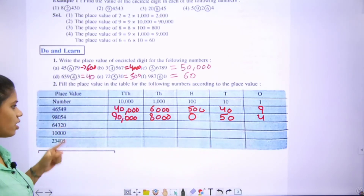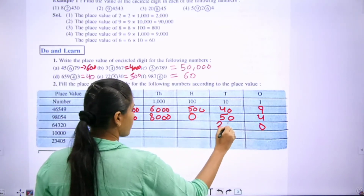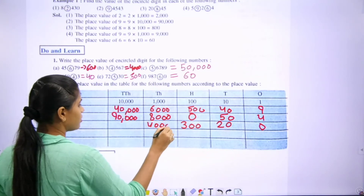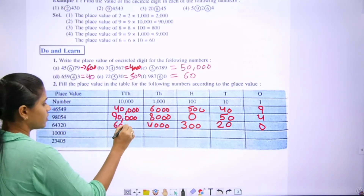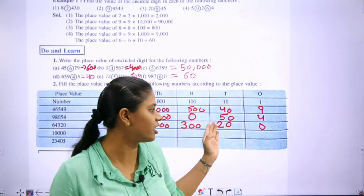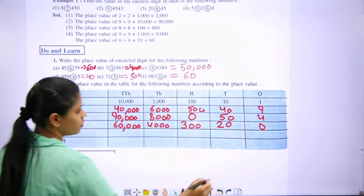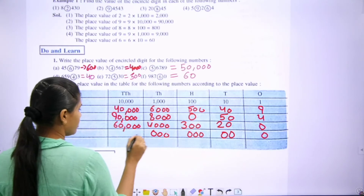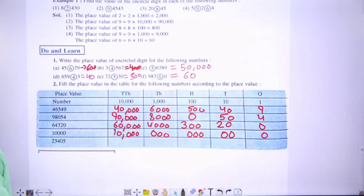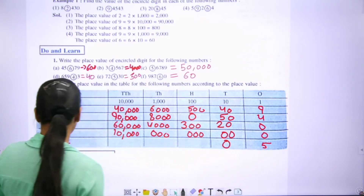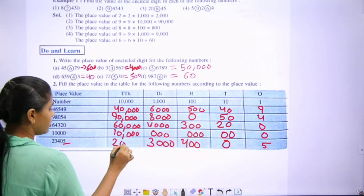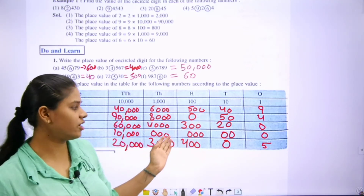Move to the next one. Ones, then tens, then hundred, then thousand, then six thousand — that is sixty-four thousand three hundred twenty. Next: ones, tens, hundred, then ten thousand. Next: ones, tens, hundred, thousand, then ten thousand — that is twenty-three thousand four hundred five.